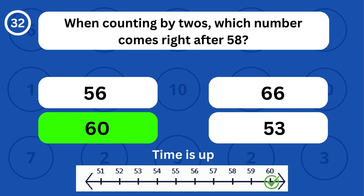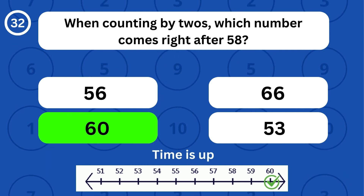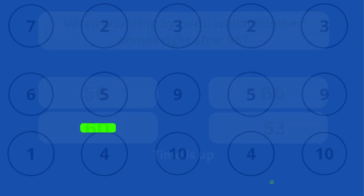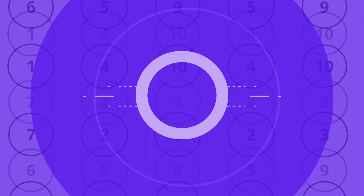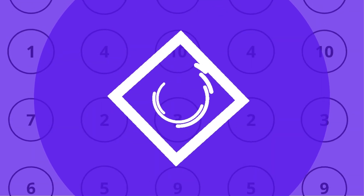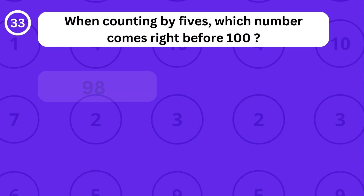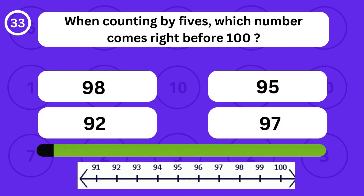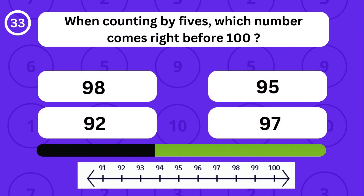When counting by twos, the number 60 comes right after 58.